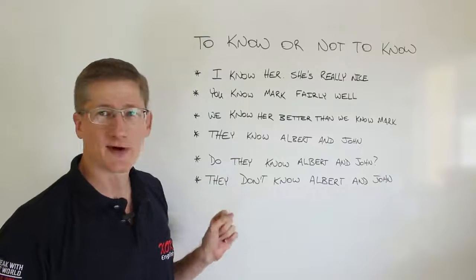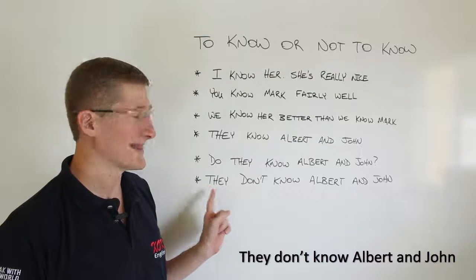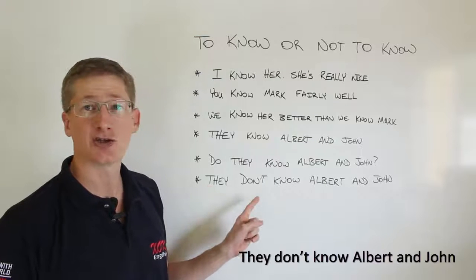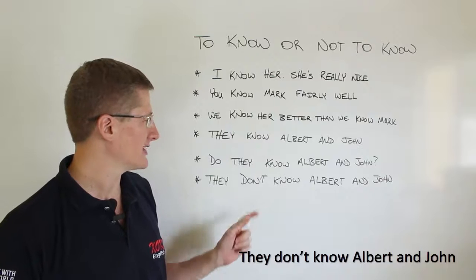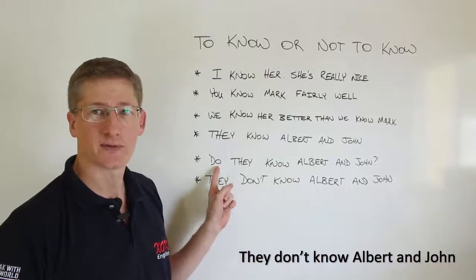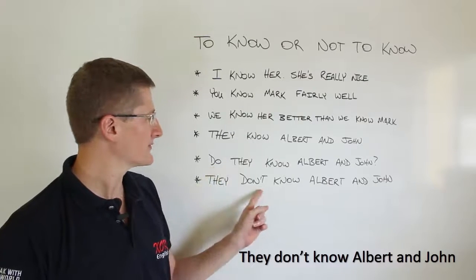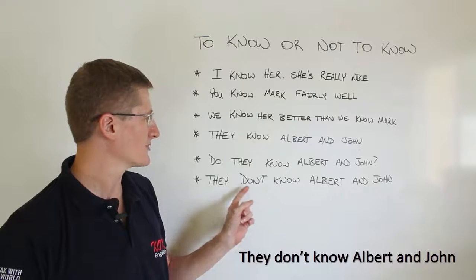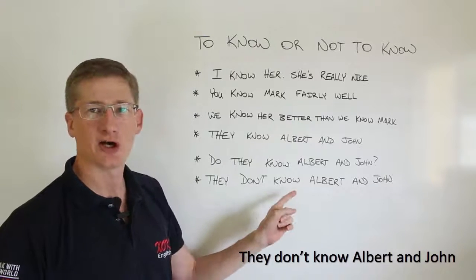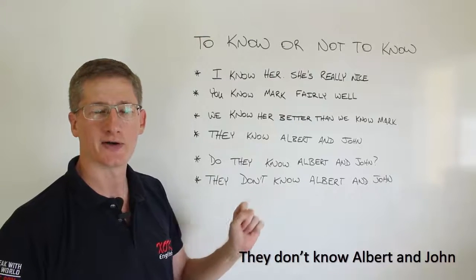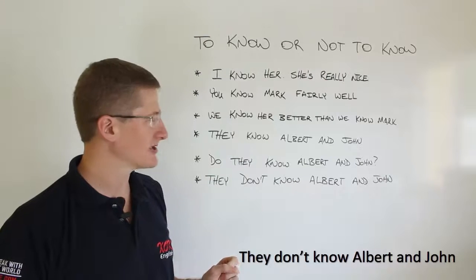The next phrase is in the negative: they don't know Albert and John. Same 'do' from the question form — do not, we just abbreviate it as 'don't.' So they don't know Albert and John.